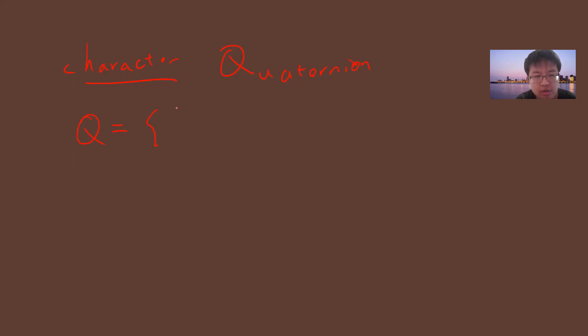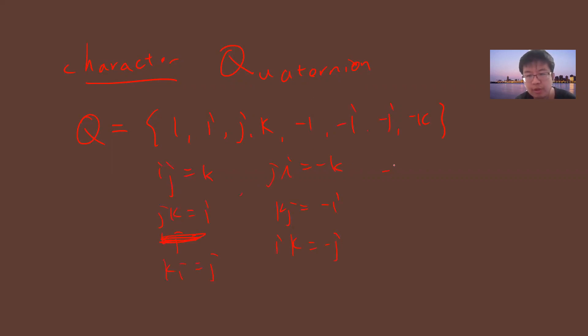Q has 8 elements: 1, i, j, k, and also -1, -i, -j, -k. The group operations follow the quaternion product rules: ij = k, jk = i, ki = j, and if you switch the order you get ji = -k, kj = -i, ik = -j. My convention uses bar notation: -1 = 1-bar, -i = i-bar, -j = j-bar, -k = k-bar.